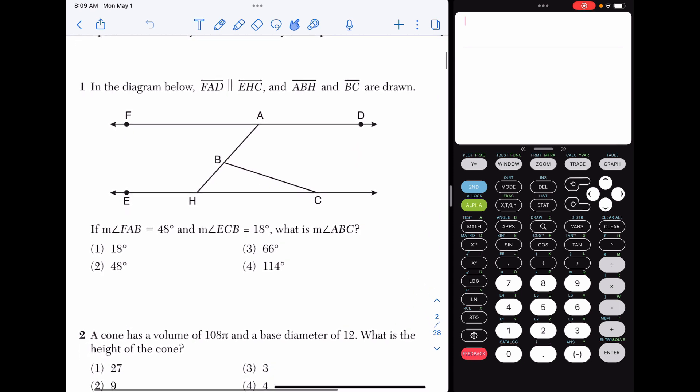In number 1, in the diagram below, line FAD is parallel to line EHC, and segments ABH and BC are drawn. It gives us a couple of angle measurements, so let's start by filling those in. Angle FAB is 48 degrees, and angle ECB is 18 degrees. We're looking for the measure of angle ABC.